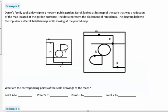So on to example two, which you have on the first page there. Derek's family took a day trip to a modern public garden. Derek looked at his map of the park that was a reduction of the map located at the garden entrance. The dots represent the placement of rare plants. The diagram below is the top view as Derek held his map while looking at the posted map.